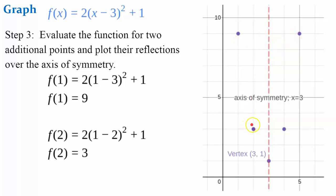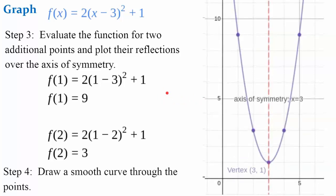And then here's my ordered pair (2, 3). That is one unit to the left. Reflect it over and you have another point, one unit to the right. Step four, draw your smooth curve through your points and you have your graph.